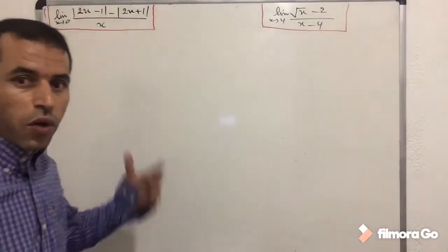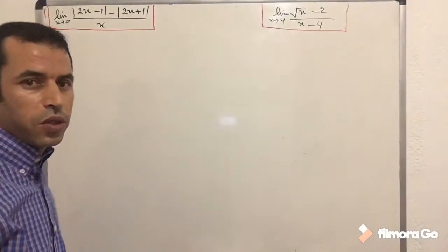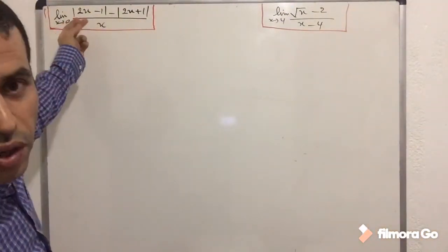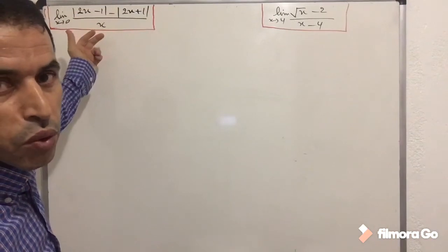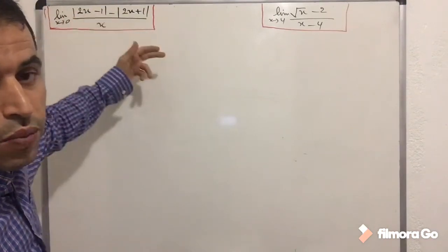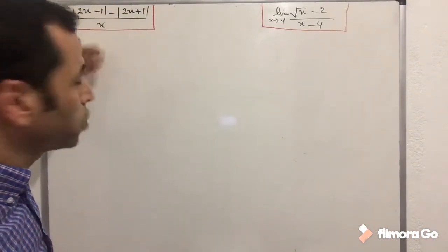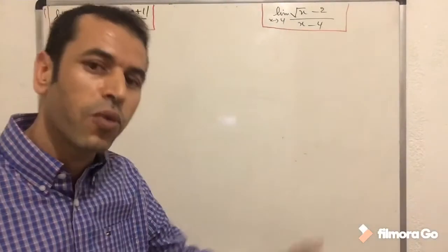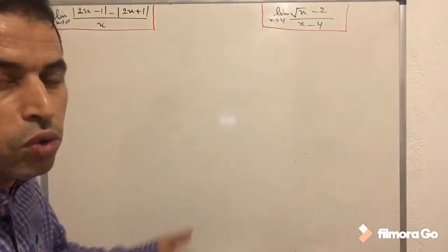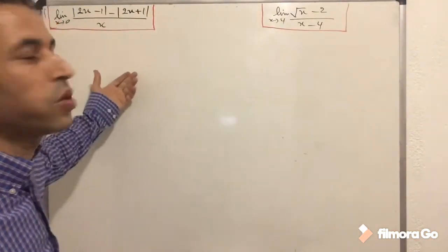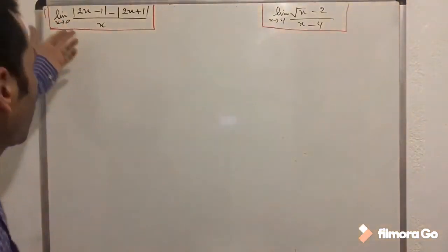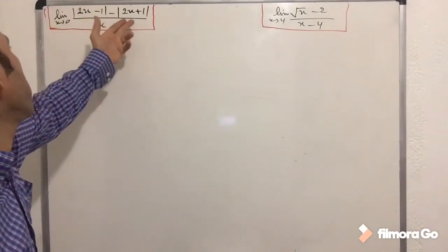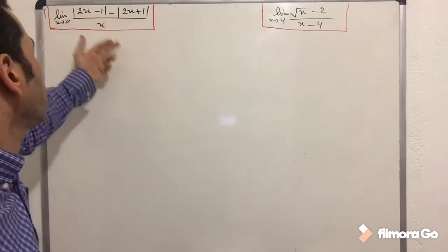Before evaluating this limit, we should know these limits contain absolute value. We cannot leave this absolute value as is and apply our limits. We should tick off the absolute value first, then apply our limits, because we don't know the sign of these terms. They may be positive or they may be negative. We don't know.